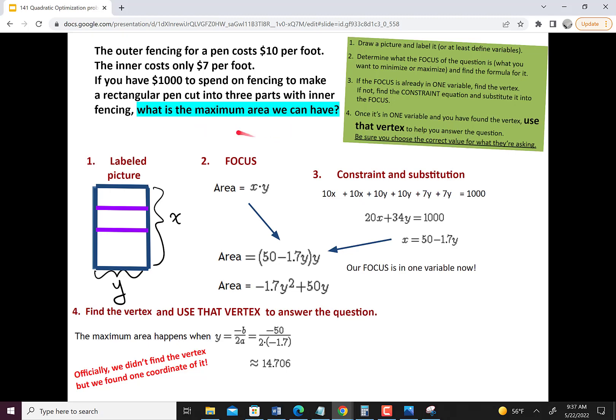And this question is, what's the maximum area we can find? So we have y, we know what the area formula is, and we just need to plug that in, and we have our answer, 367.65 square feet. And we are done with this optimization problem.